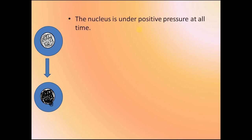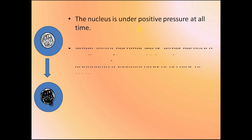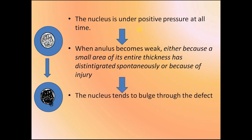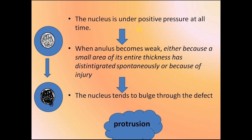Now in detail about nucleus displacement: the nucleus is under positive pressure at all times. When the annulus becomes weak — either because a small area of its entire thickness has disintegrated spontaneously or because of injury — the nucleus tends to bulge through the defect. This is called disc protrusion. In this condition, the nucleus is still in contact with its parent disc.